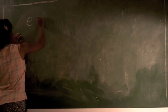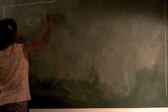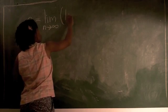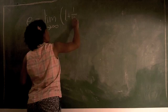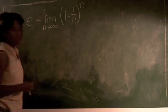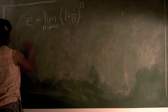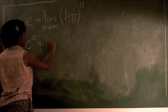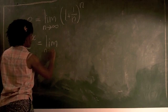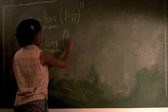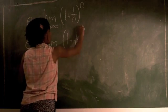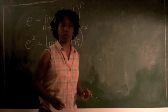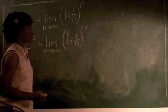E is equal to the limit as n goes to infinity of 1 plus 1 over n to the n power. This is the definition of e. That means that e to the x is equal to the limit as n goes to infinity of 1 plus 1 over n to the nx power. Now for the purposes of our proof, it will be more convenient if we write this limit in a slightly different form.